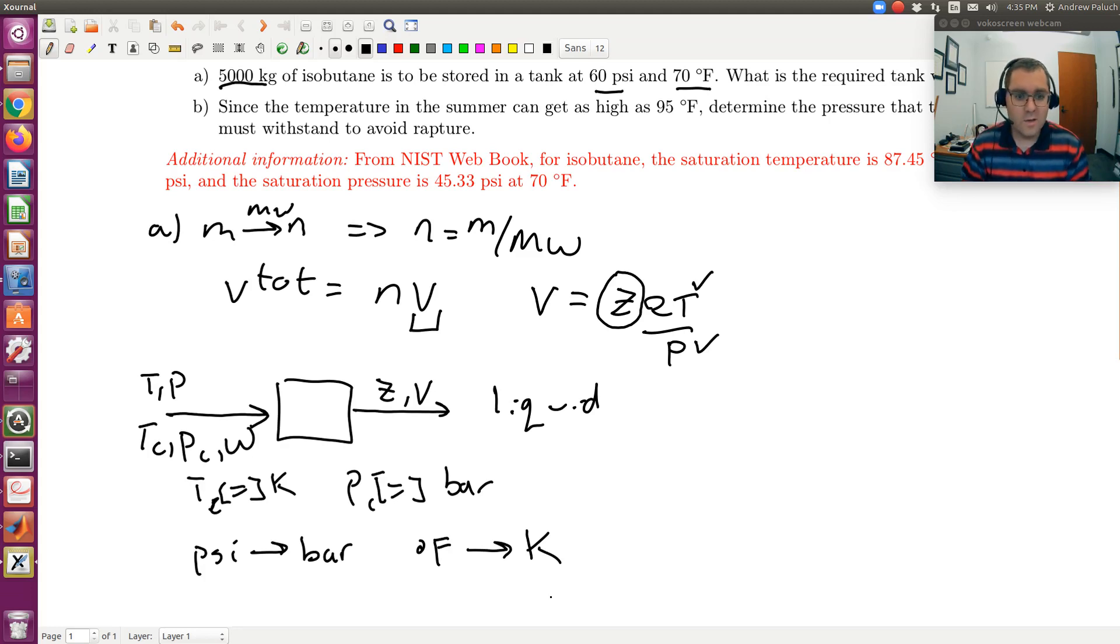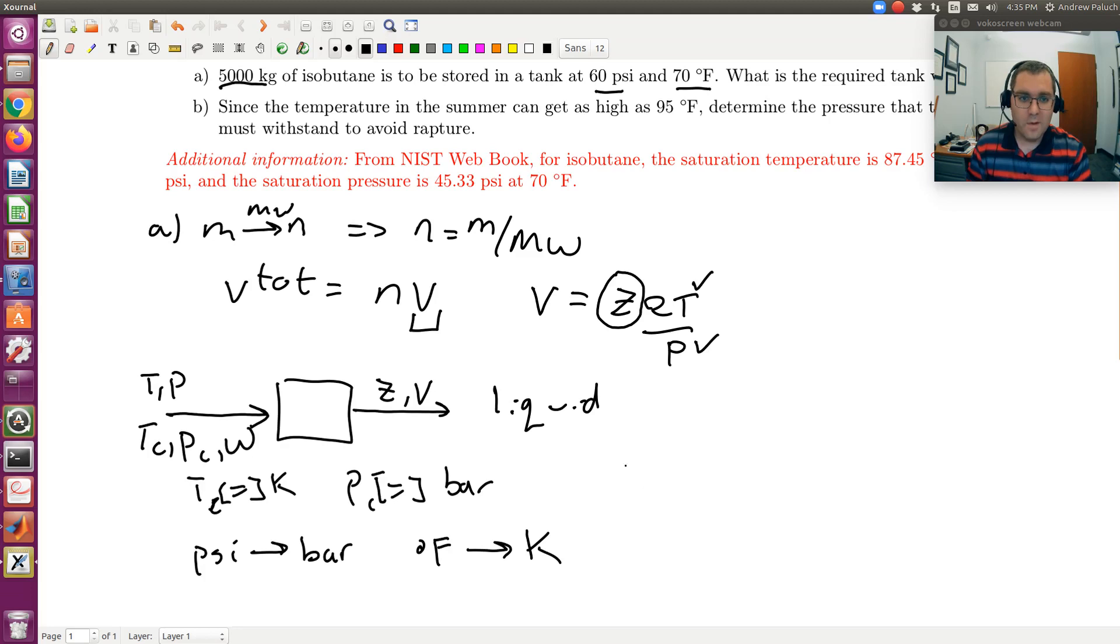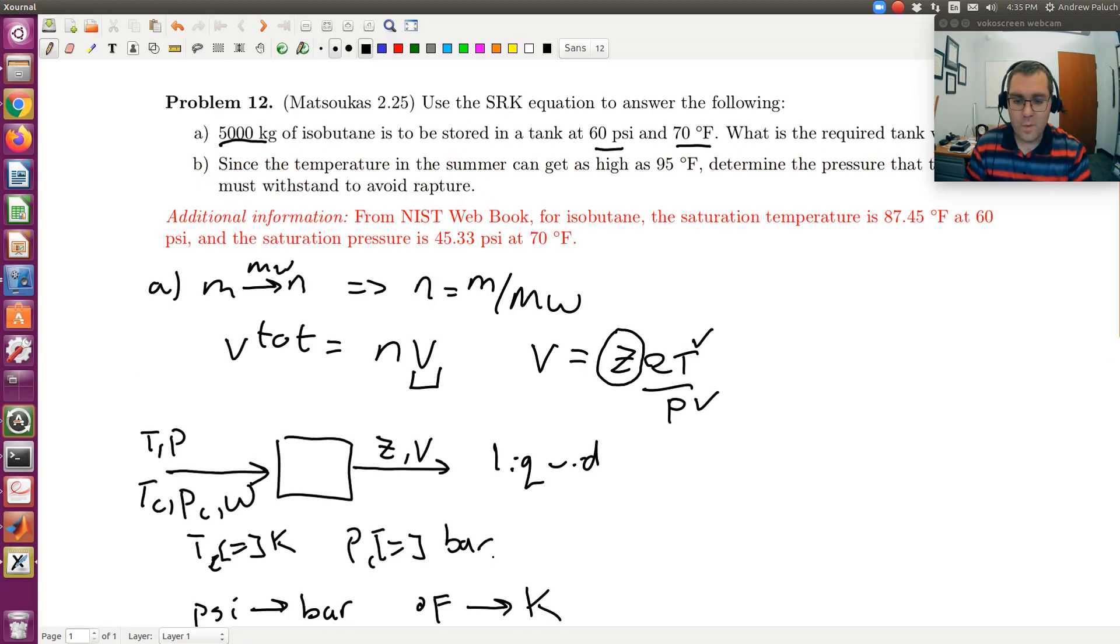So actually, I won't go and compute this since we demonstrated this in the last problem. But the bigger thing here would be you'd have to look up the conversion factors to go from psi to bar and degree Fahrenheit to Kelvin. But then once you have that, the calculation is straightforward. You can then use the SRK equation of state code directly to calculate V.